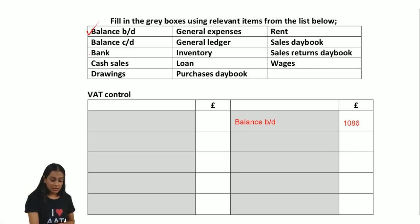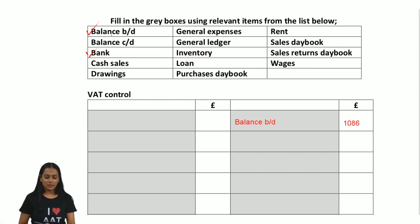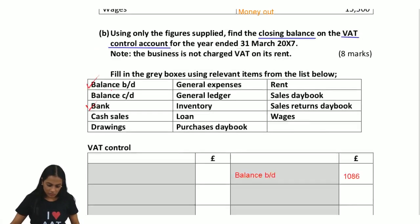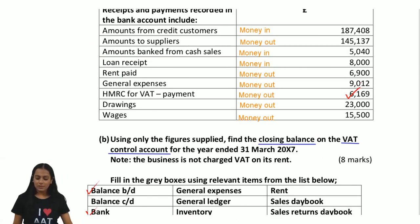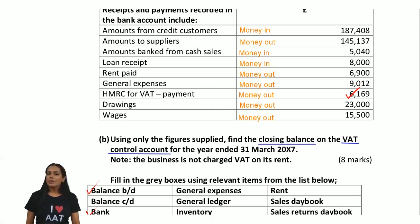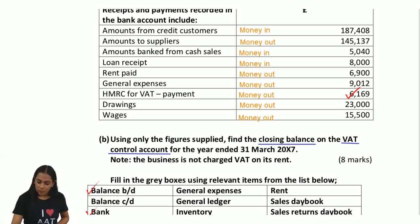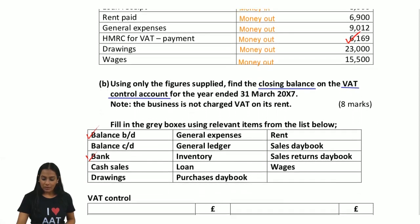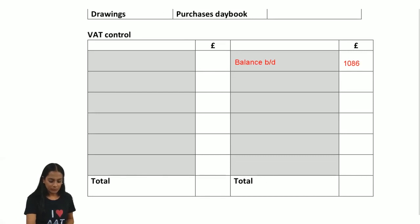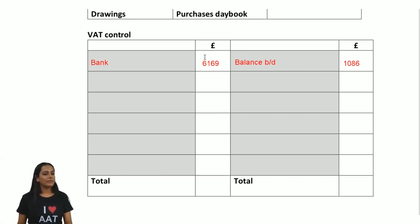Going through the list one by one to identify elements relating to the VAT control account: the bank amount relates to the amounts paid to the authorities, and that is money out — 6169. If you paid money to the authorities, the amount you owe them is reduced, eliminating the liability. Therefore we debit the VAT control account by 6169. I write bank, 6169 on the debit side.